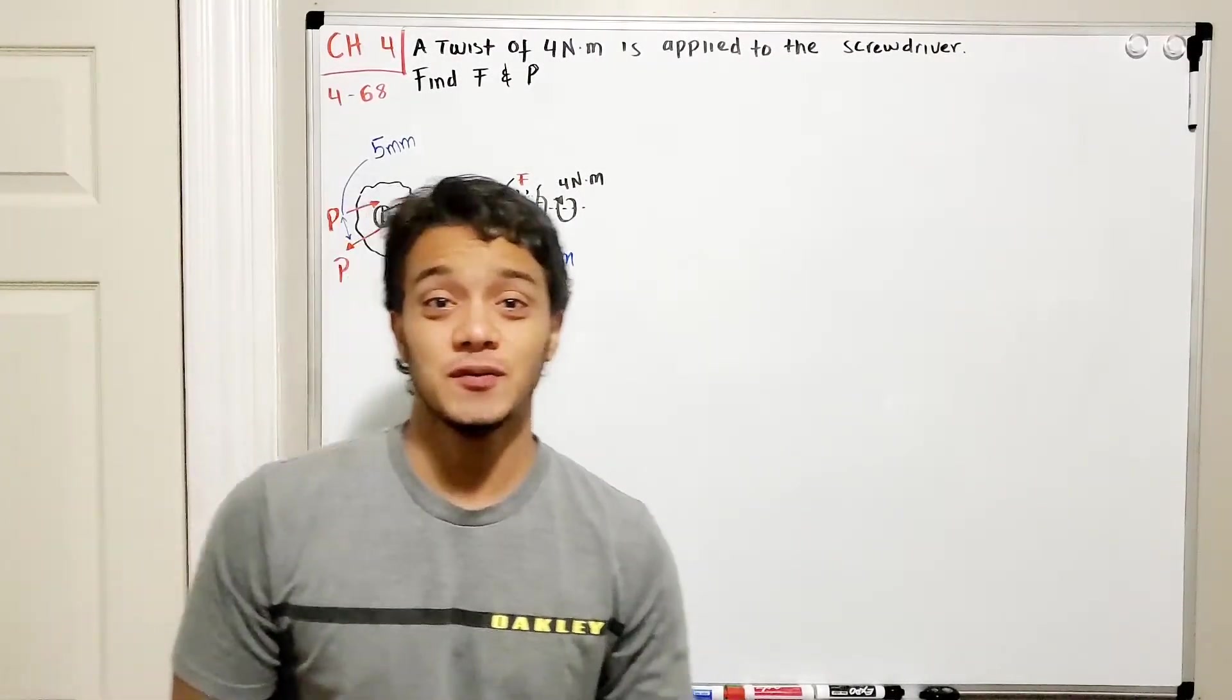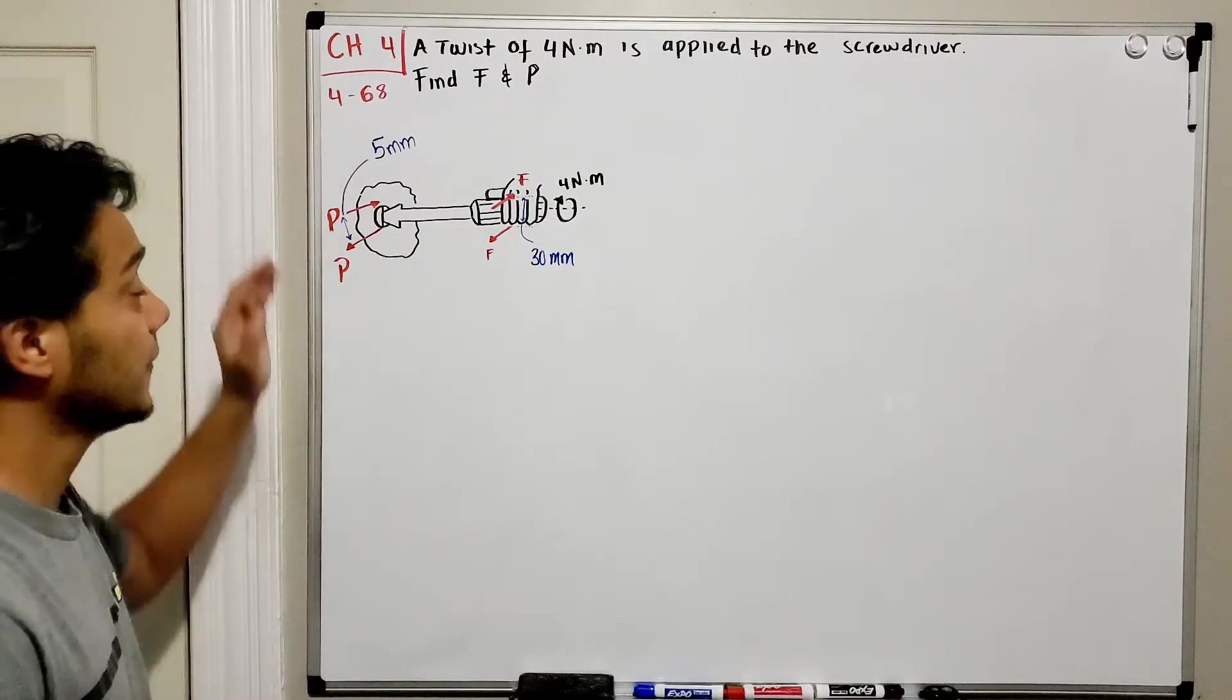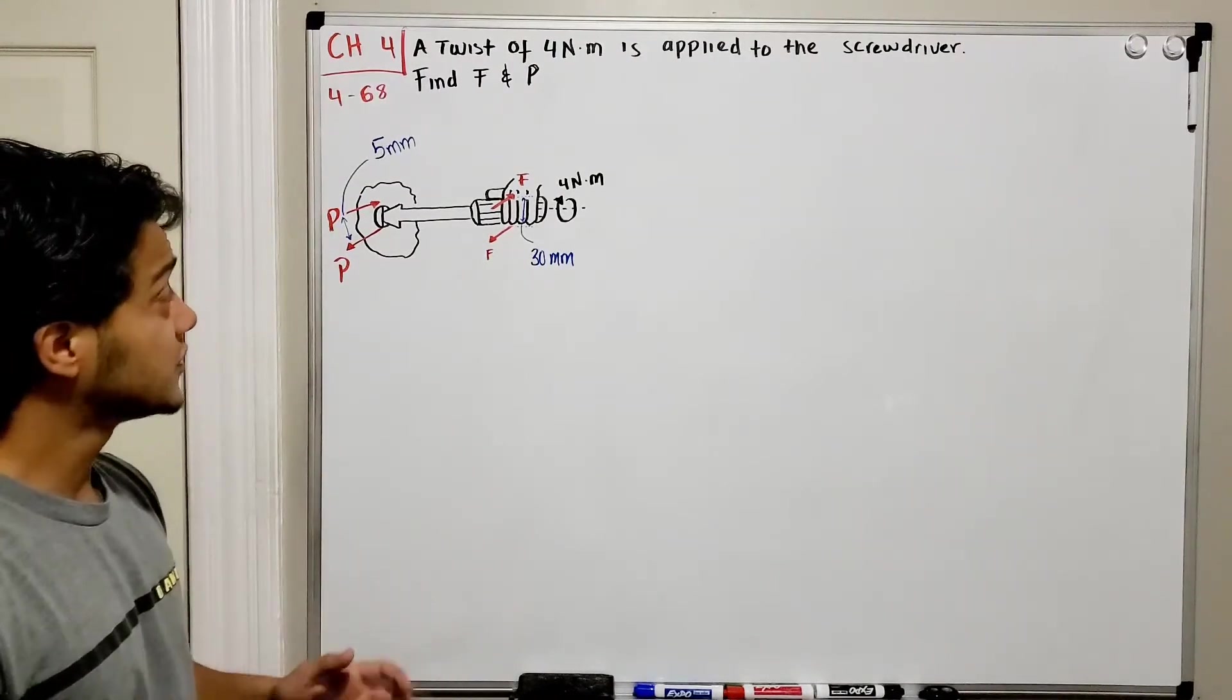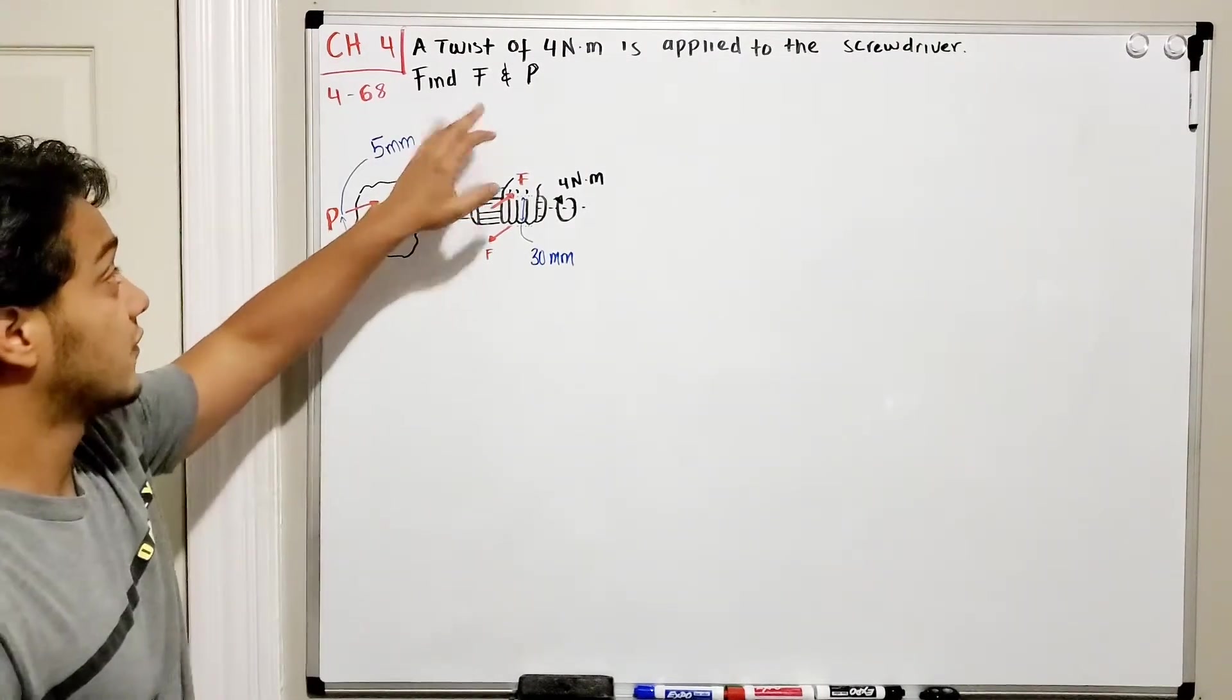Welcome back everyone to Learning by Teaching Statics. We're going to do problem 4.68. It says a twist of 4 newton-meters is applied to the screwdriver and we need to find F and P.